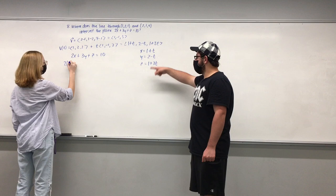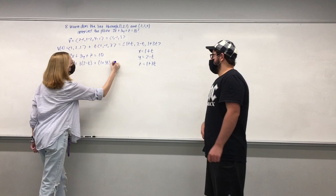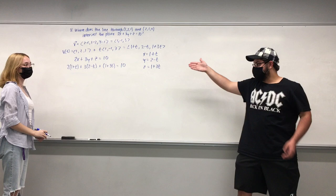So what we're going to do now is substitute each of these expressions into their corresponding variables. So we have 2 times quantity (1 plus t) plus 3 times quantity (2 minus t) plus quantity (1 plus 3t) equals 10.